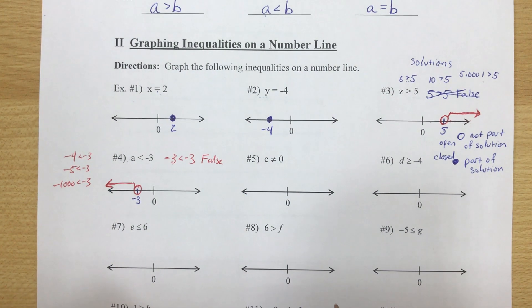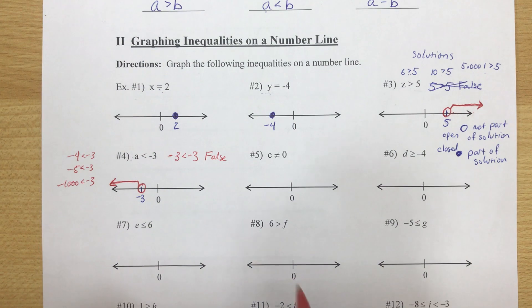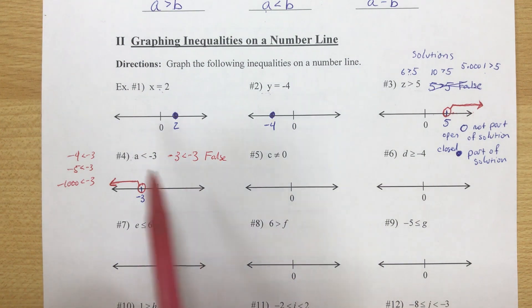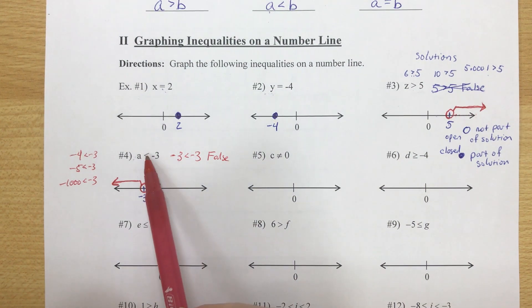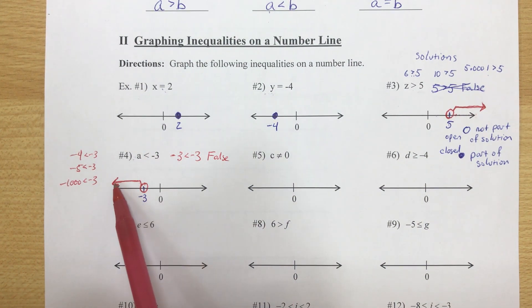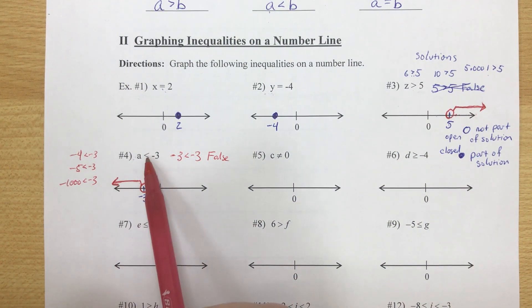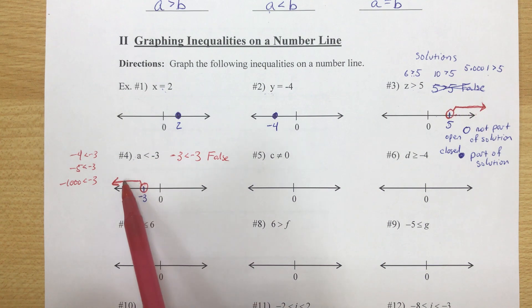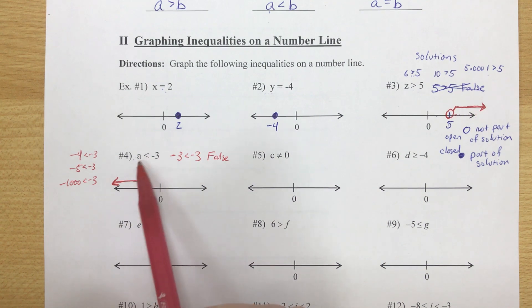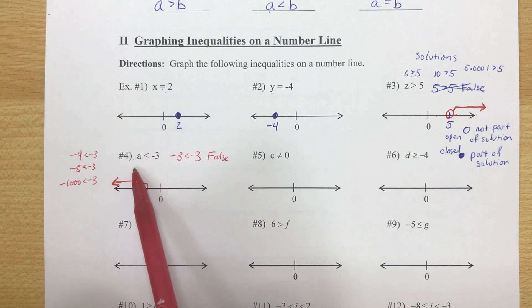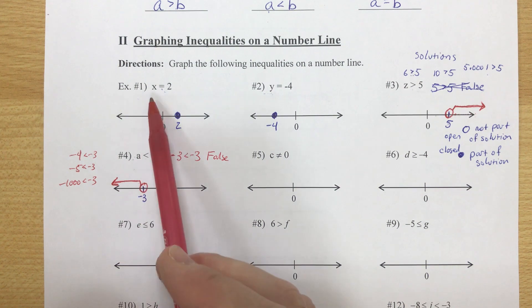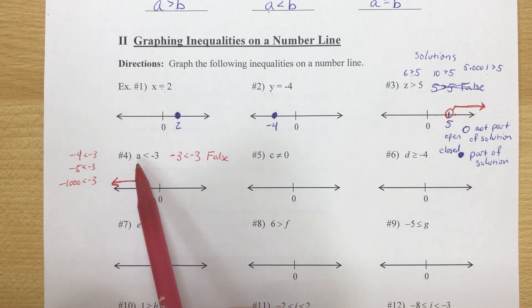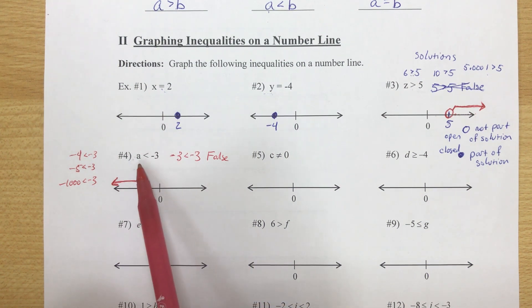A helpful rule: less than means we graph to the left, as long as the variable is on the left side of the inequality — whether it's x, a, or whatever letter is used.